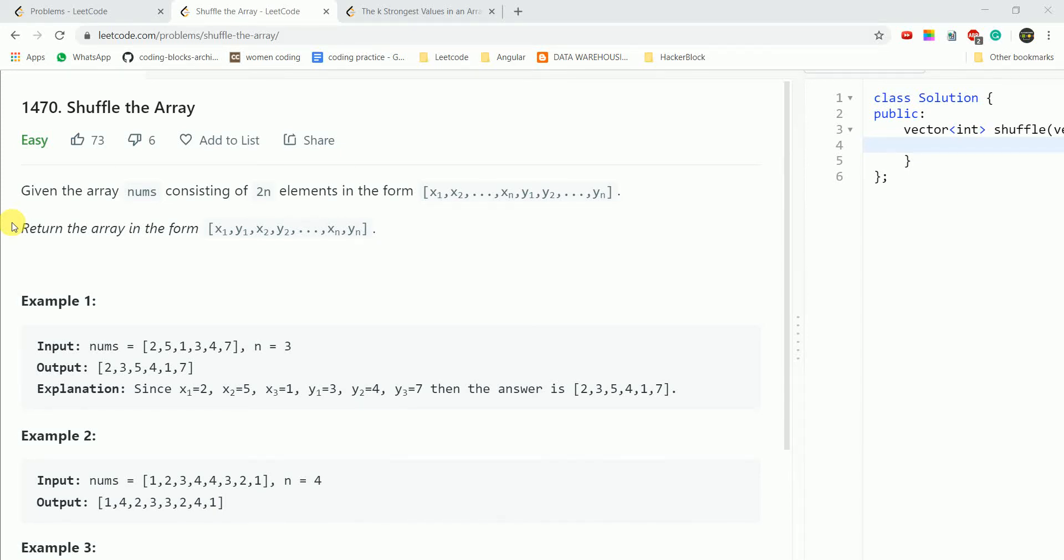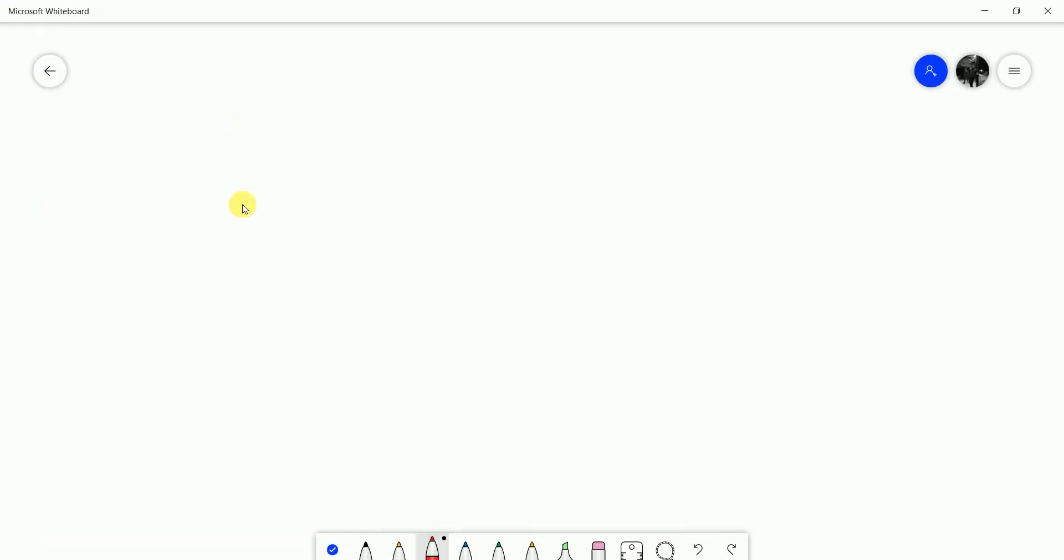Hi guys, today we are going to do the question Shuffle the Array. Given the array nums consisting of 2n elements in the form x1, x2, xn, y1, y2 to yn, return the array in the form x1, y1, x2, y2 up till xn, yn. Let's take this example where we are given an array of 2, 5, 1, 3, 4, 7.